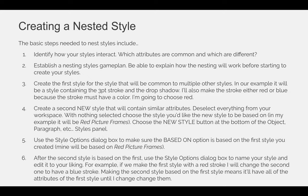Step four: create a second new style that will contain similar attributes. Deselect everything from your workspace. With nothing selected, choose the style you'd like the new style to be based on — in this example, it will be the red picture frame style. Choose the new style button at the bottom of the object/paragraph styles panel. Step five: use the style options dialog box, or double-click on the style, to make sure that the 'based on' option is set to the first style that you created. Mine will be based on the red picture frames.